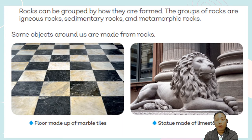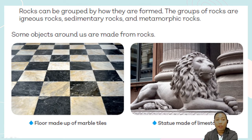Some objects around us are made from rocks. For example, this floor is made from marble tiles, and marbles are made from rocks. This statue is made from limestone, which is also a kind of rock. So here are the three groups of rocks: igneous, sedimentary, and metamorphic.